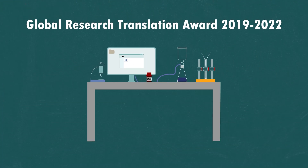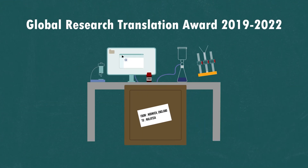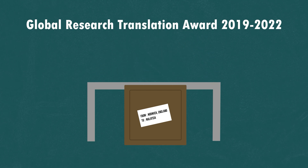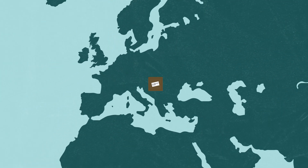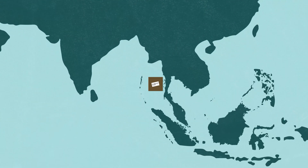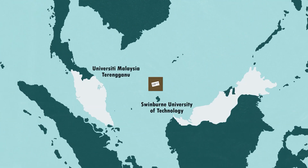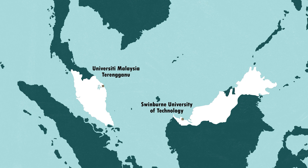The vision for the Global Research Translation Award was to assemble the equipment required for our relatively low-cost and rapid approach into kits, and to make these kits available to partners in Malaysia so they could use it to analyse samples locally in a simple and cost-effective way.